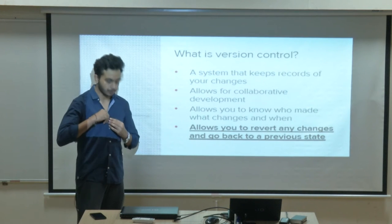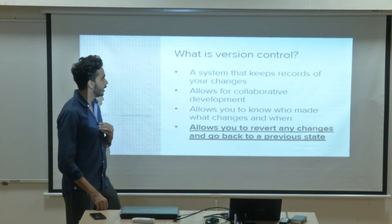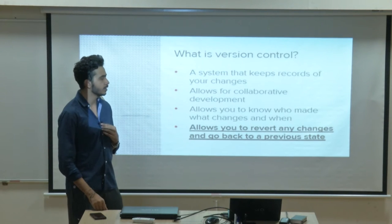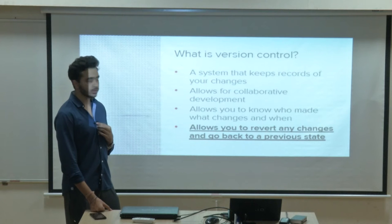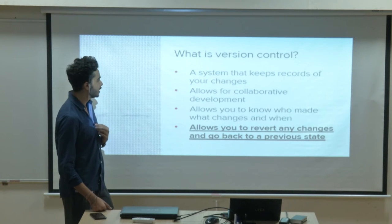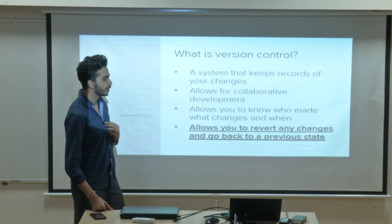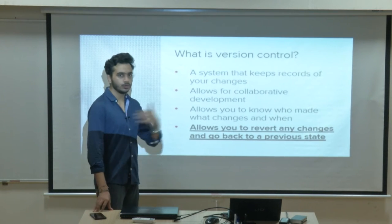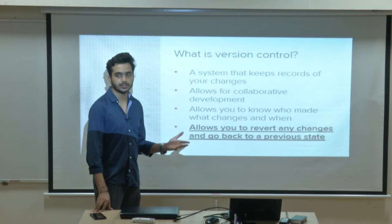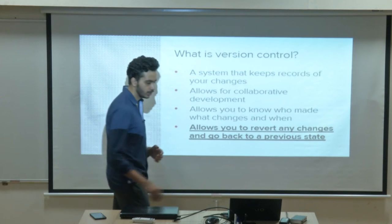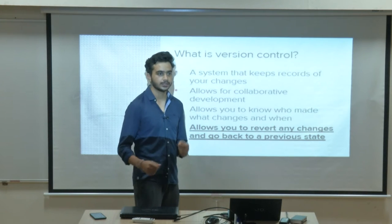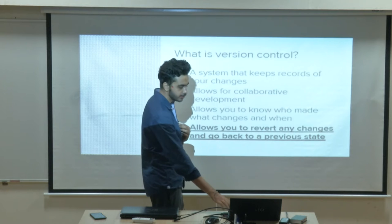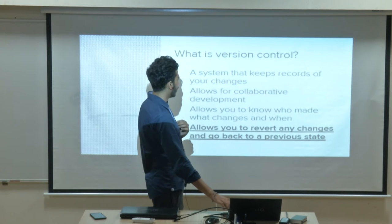Version control is something which keeps track of your code. If four people are working on a project and are situated at different places, there is a huge problem in syncing your code. Using version control systems, we basically sync our code, keep track of our code, we can roll back to the previous stable state, we can add more commits — all these sorts of things.